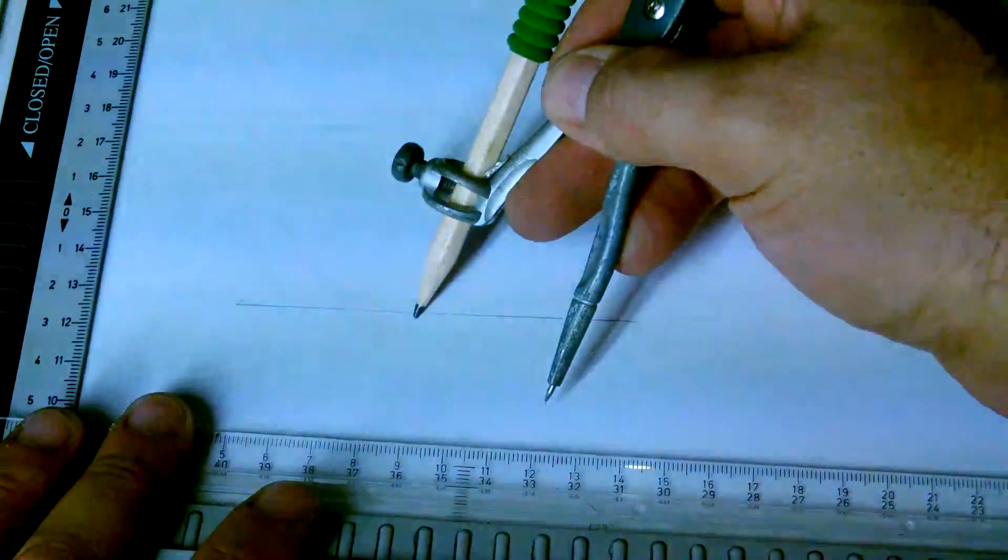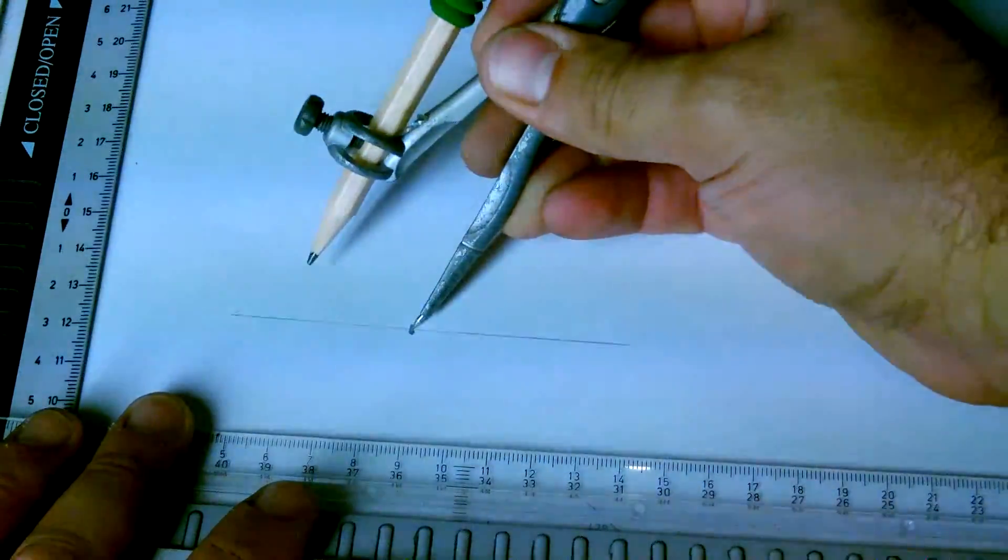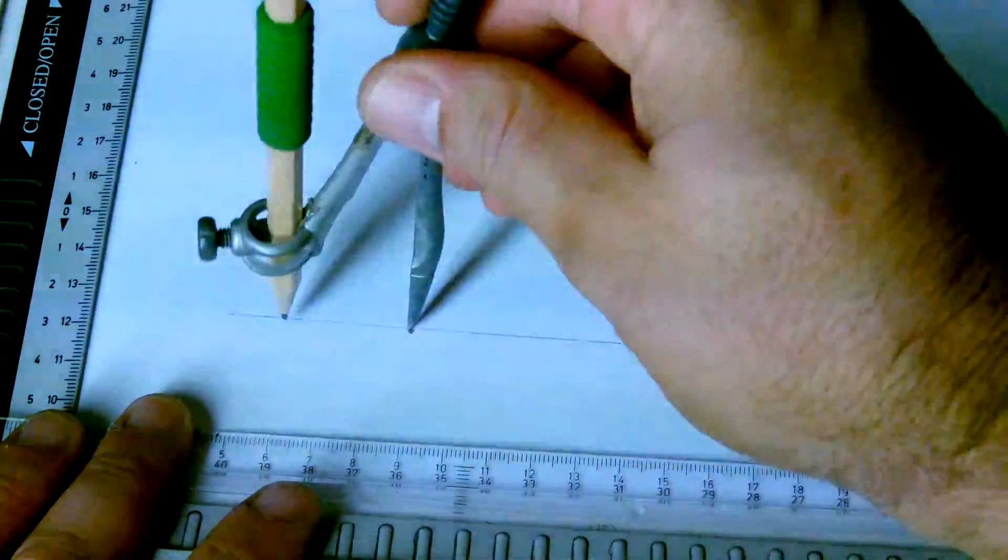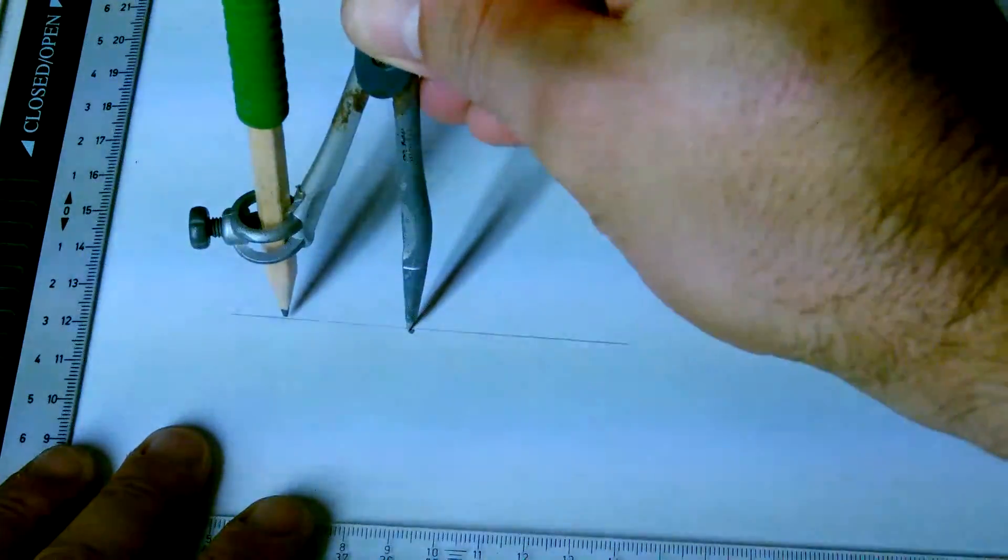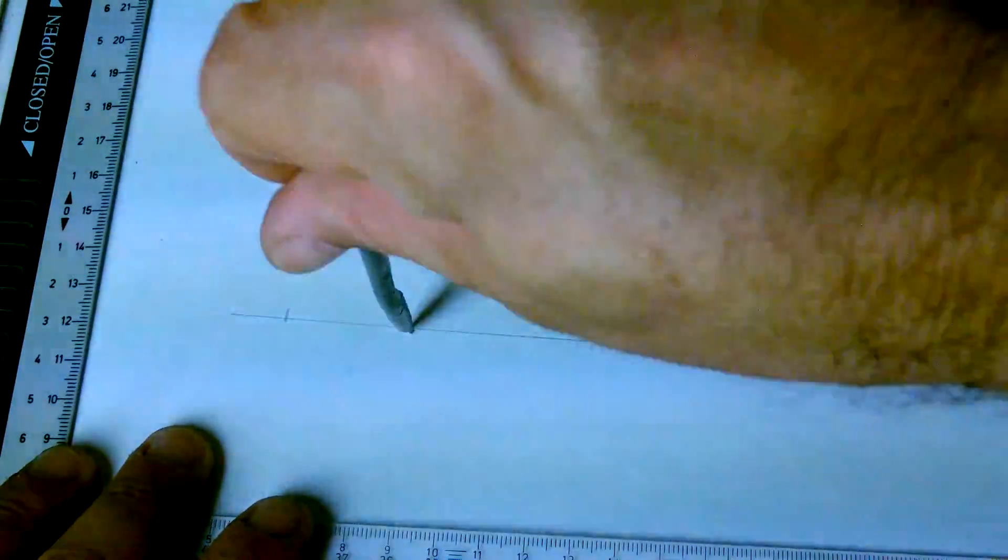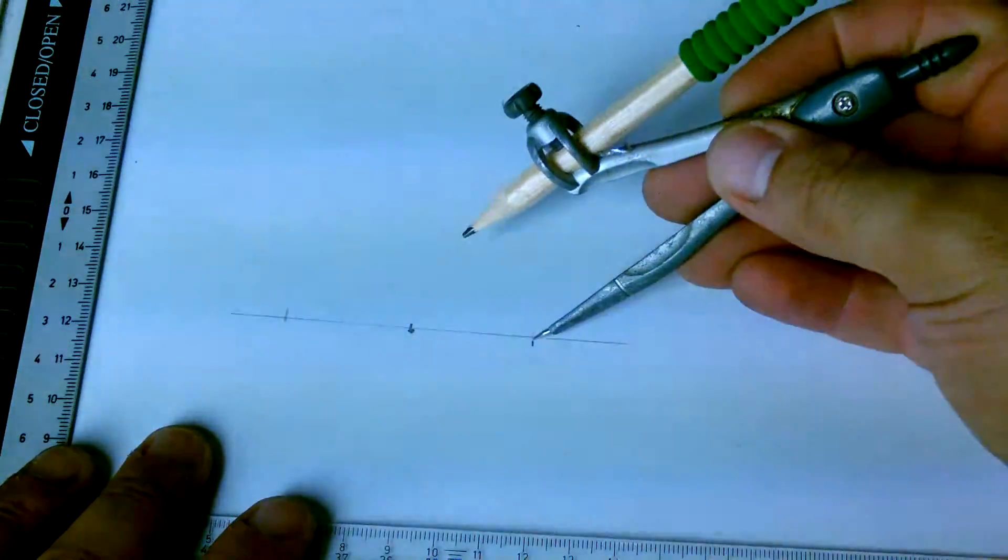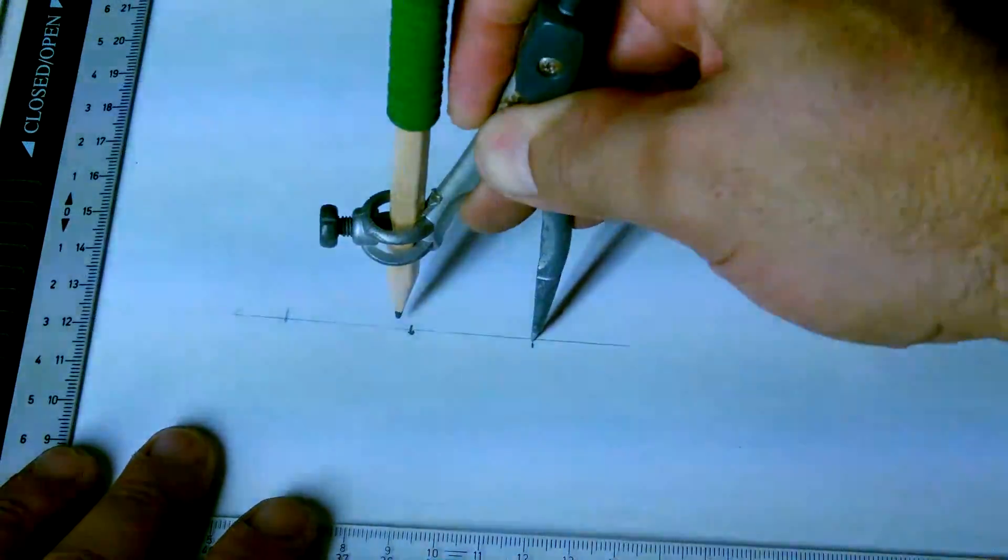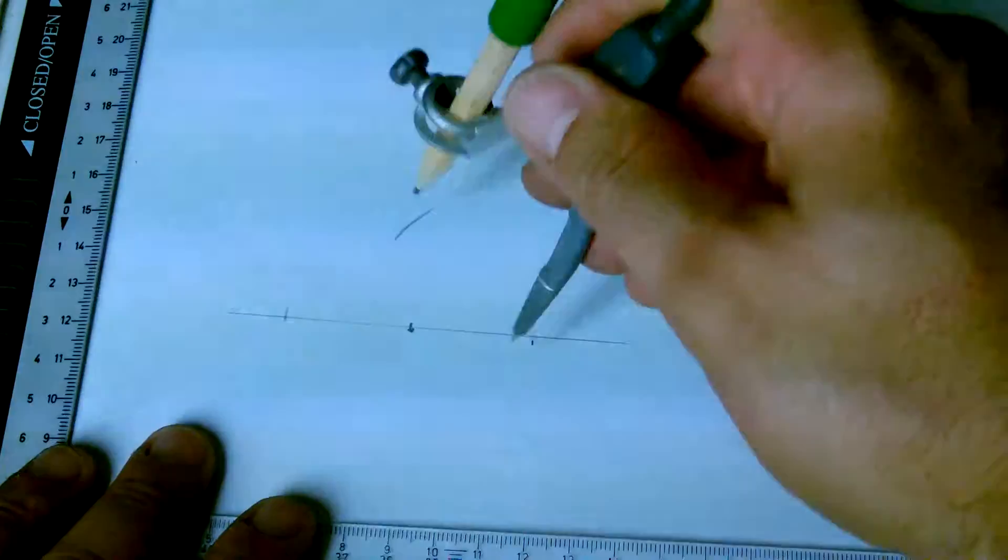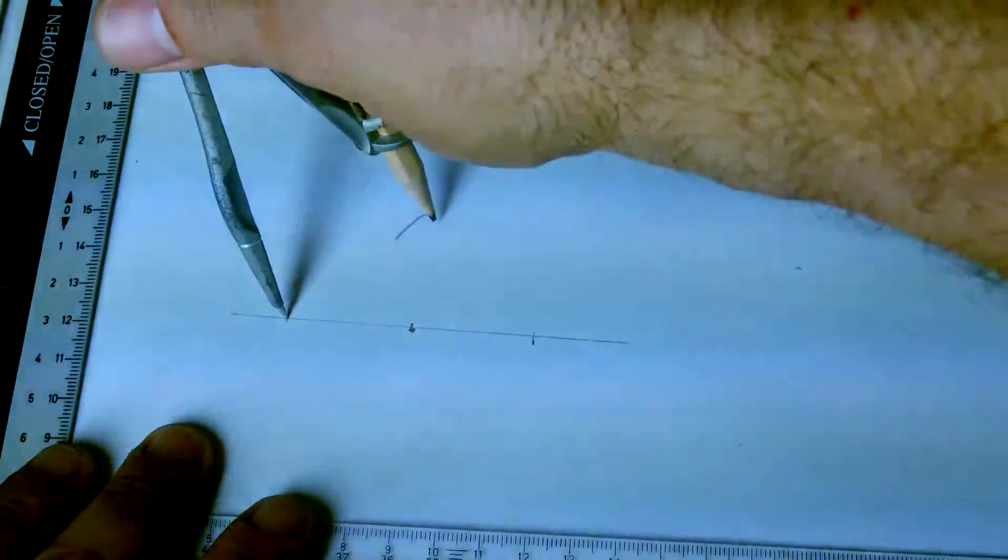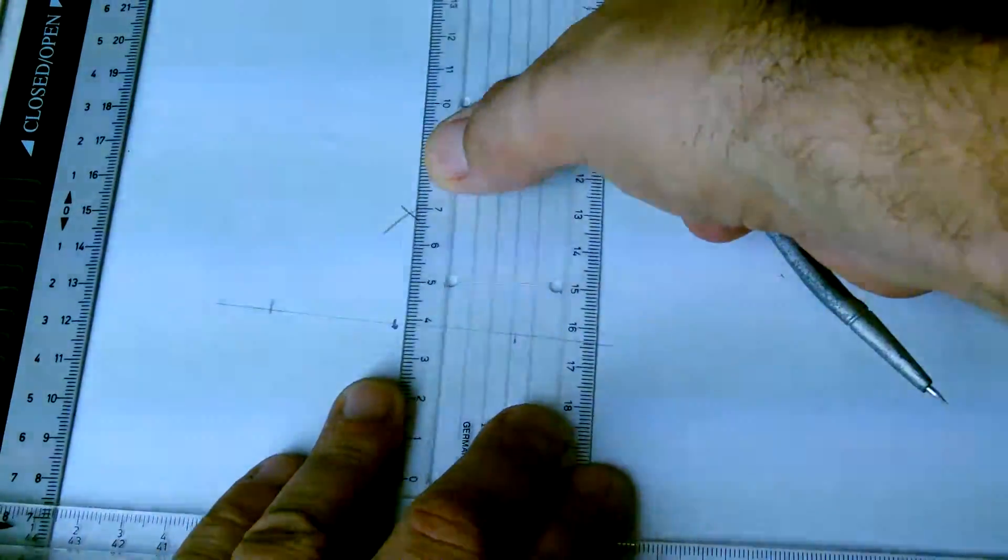What you need to do is open your compass as much as you like and draw two equidistant points there and there from here. Open the compass a bit more, draw an arc that intersects from both points, and that gives you a perpendicular.